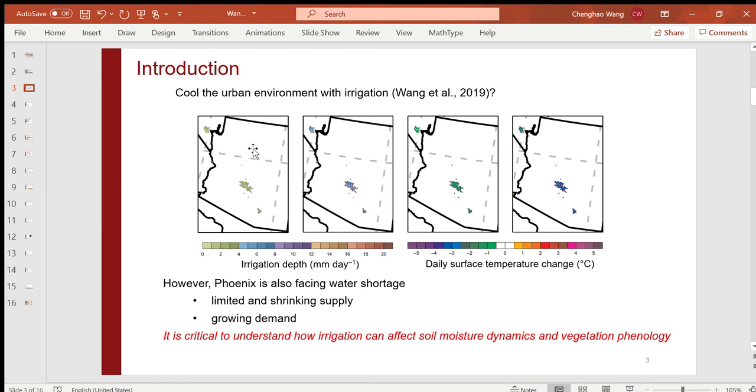The left two figures are irrigation depths, while the right two figures are the corresponding surface temperature change. Apparently, higher cooling effect can be achieved via more irrigation.